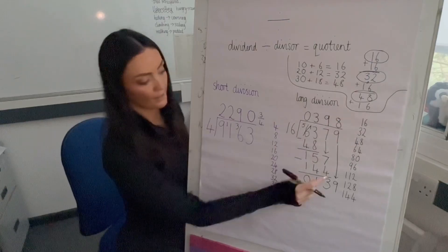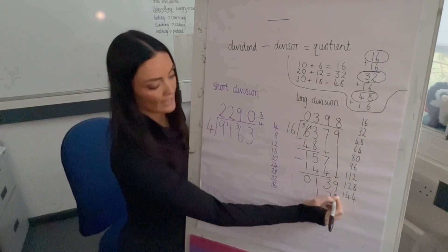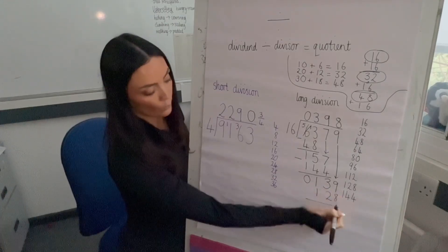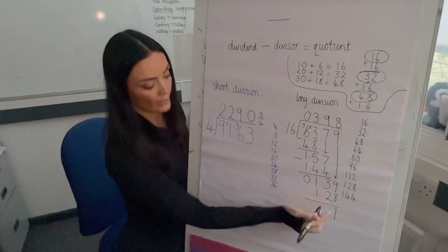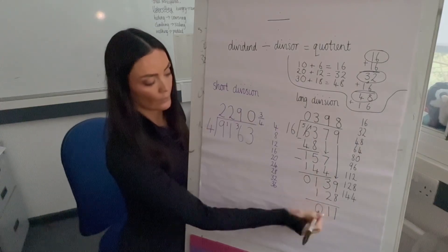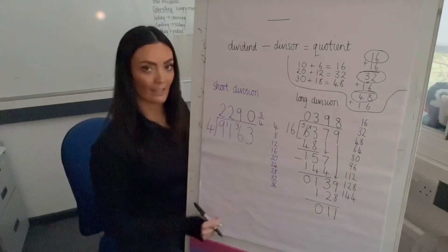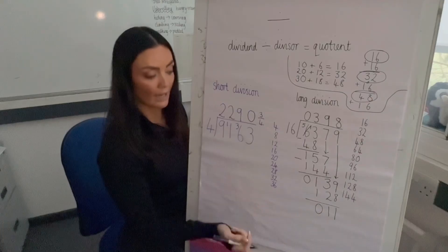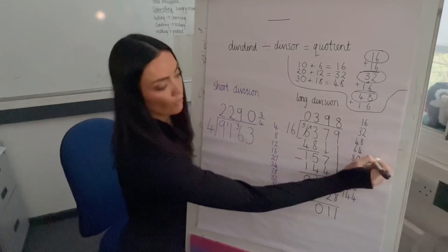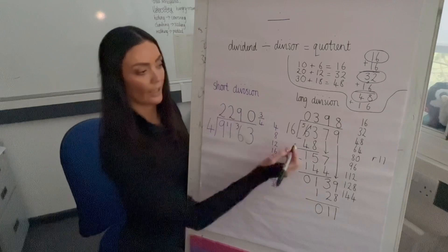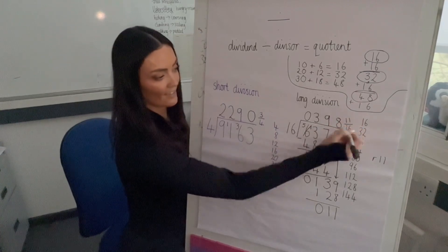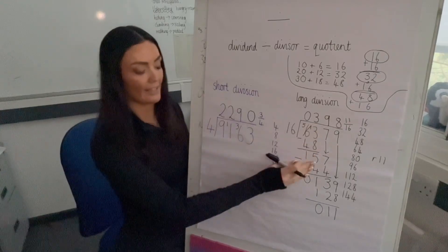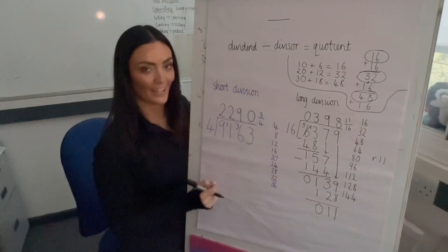Bring the 9 down to make 139. How many groups of 16 in 139? Eight groups — that equals 128. Subtract: 9 − 8 = 1; 3 − 2 = 1; 1 − 1 = 0. Nothing else to bring down, no more groups of 16 in 11, so 11 is our remainder. Write remainder 11, or as a fraction: 11 over 16. You're calculating the remainder on paper rather than in your head.